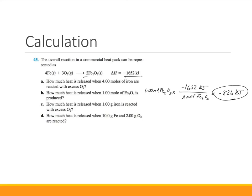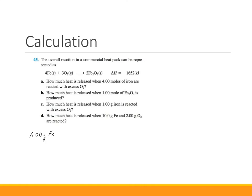Part C: what happens if 1.00 gram of iron is reacted with excess oxygen? We need to turn grams into moles: 1.00 g Fe × (1 mol Fe / 55.85 g Fe) × (−1,652 kJ / 4 mol Fe) = −7.39 kJ of energy. It's negative because it is an exothermic reaction.